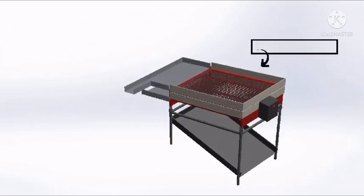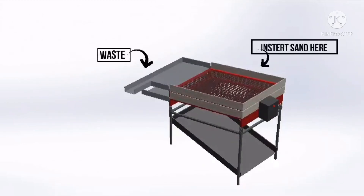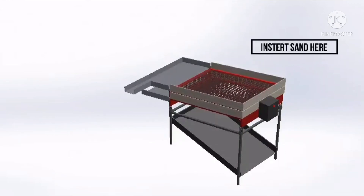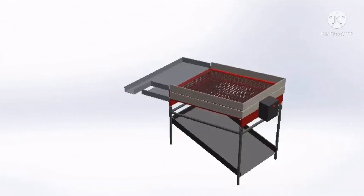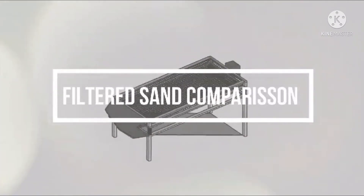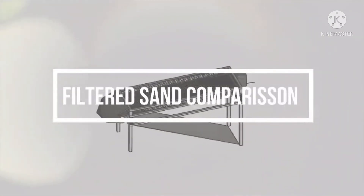Once sand is added to the vibrating filter, waste material will be removed from the top pad. Then the sand particles that are too big to go through the second net are removed from pad 2. Finer sand particles are collected at the bottom. The functions of the machine are demonstrated in this part.